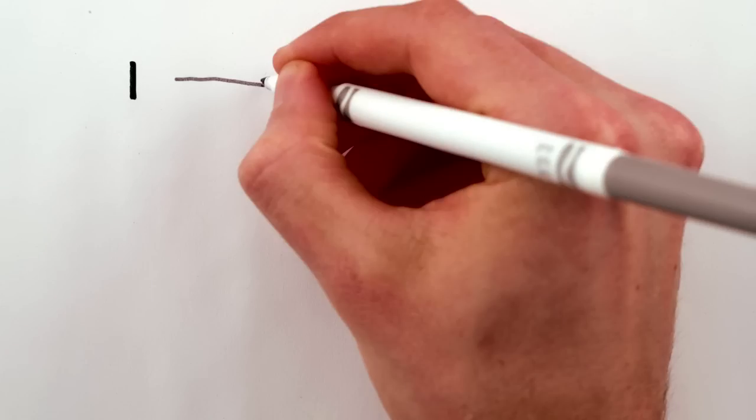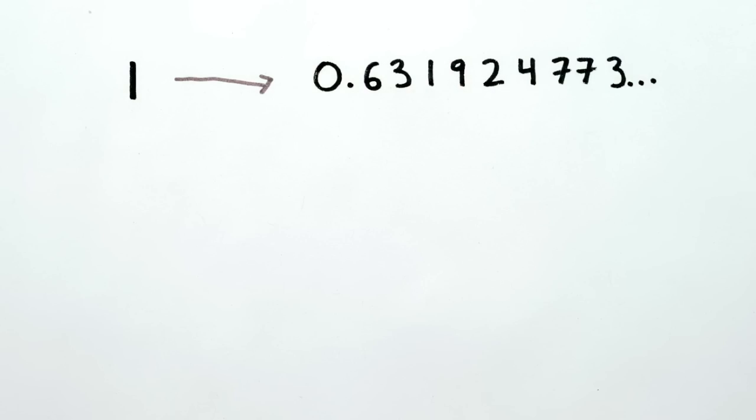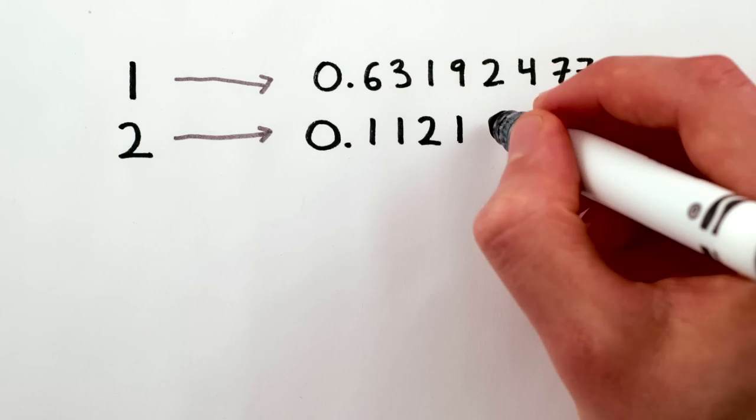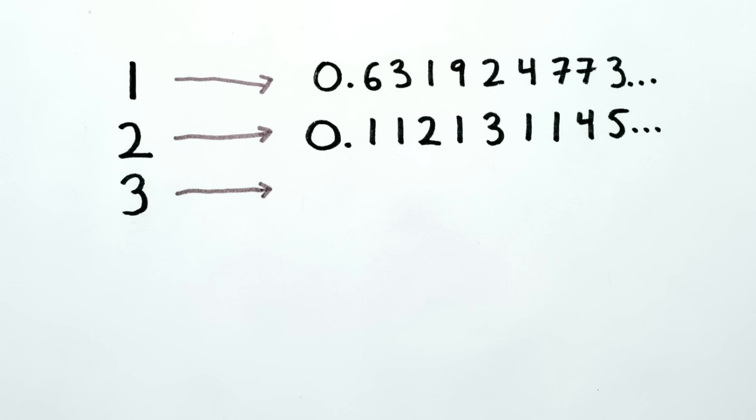Just draw some lines. For one, draw a line to a number between zero and one. And for two, draw a line to another number between zero and one. For three, draw a line to a number between zero and one. And so on.